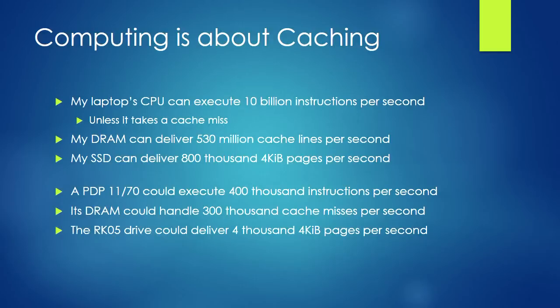I want to talk about the page cache. The important thing to know is that computing is all about caching, particularly these days. I just bought a new laptop, and you can see: 10 billion instructions per second, which is great until you take a cache miss — at which point RAM can only deliver 530 million cache lines per second. So if you're missing one cache line every 10 instructions, you've halved your CPU speed. And if you go all the way to the SSD, it can only deliver 800,000 four-kilobyte pages per second.